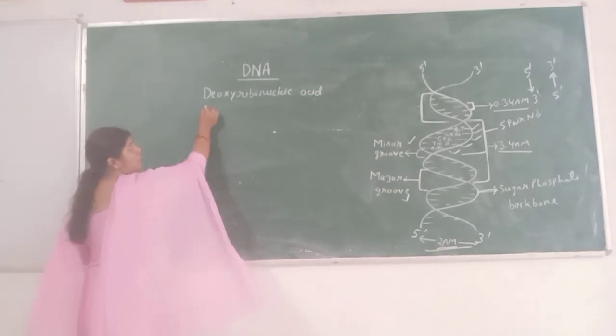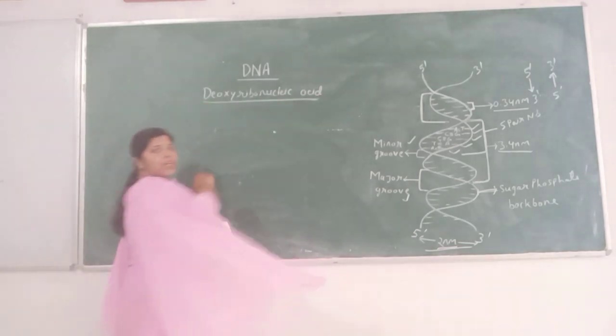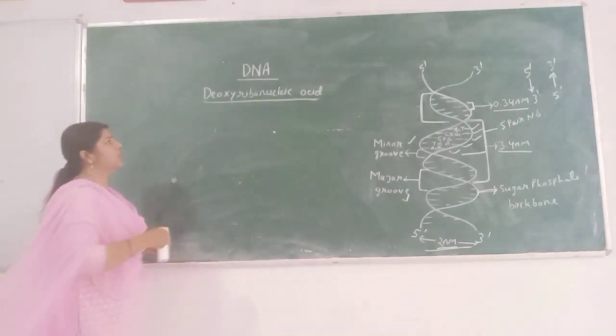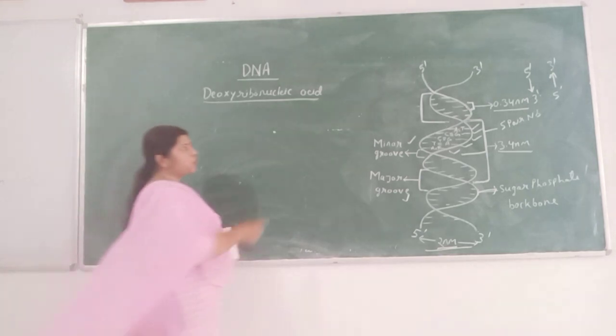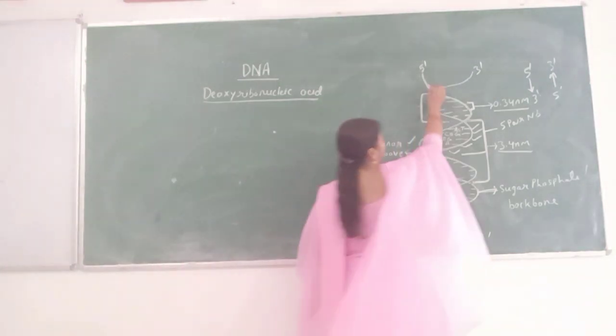The full form of DNA is deoxyribonucleic acid. DNA consists of two polynucleotide strands.